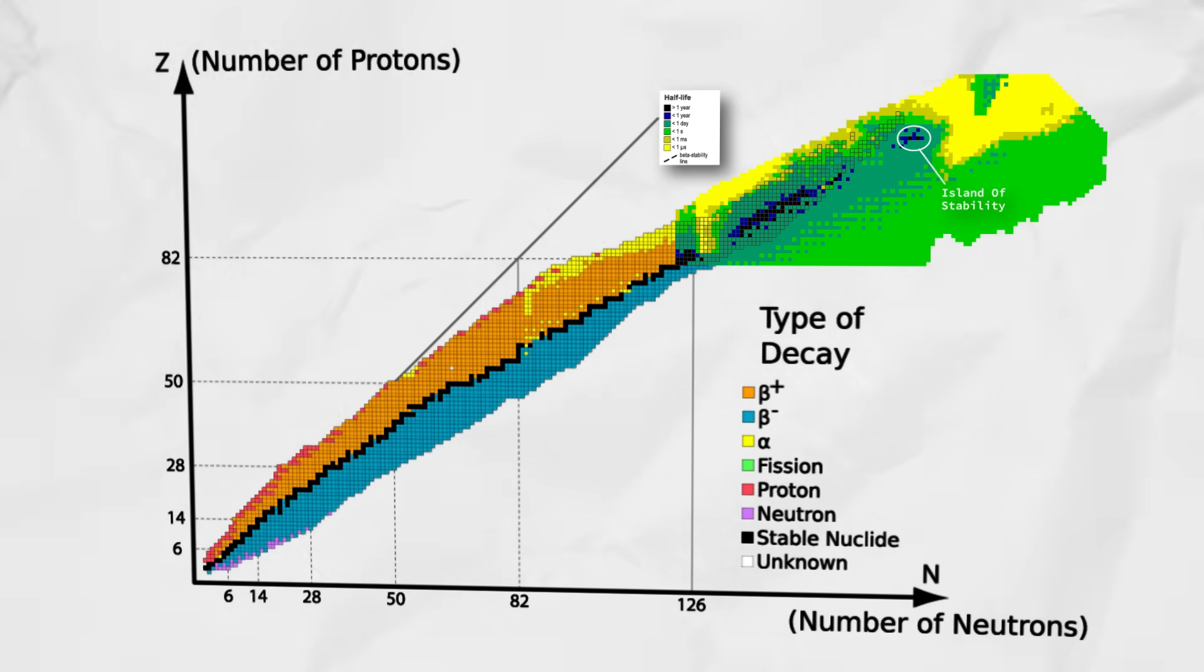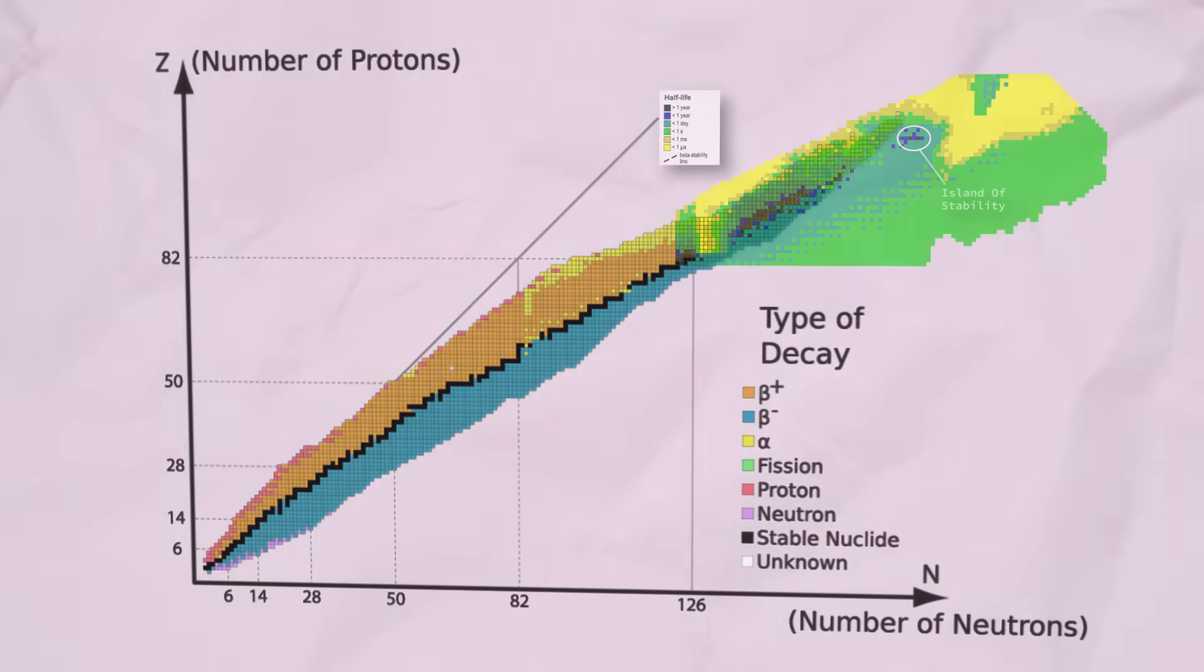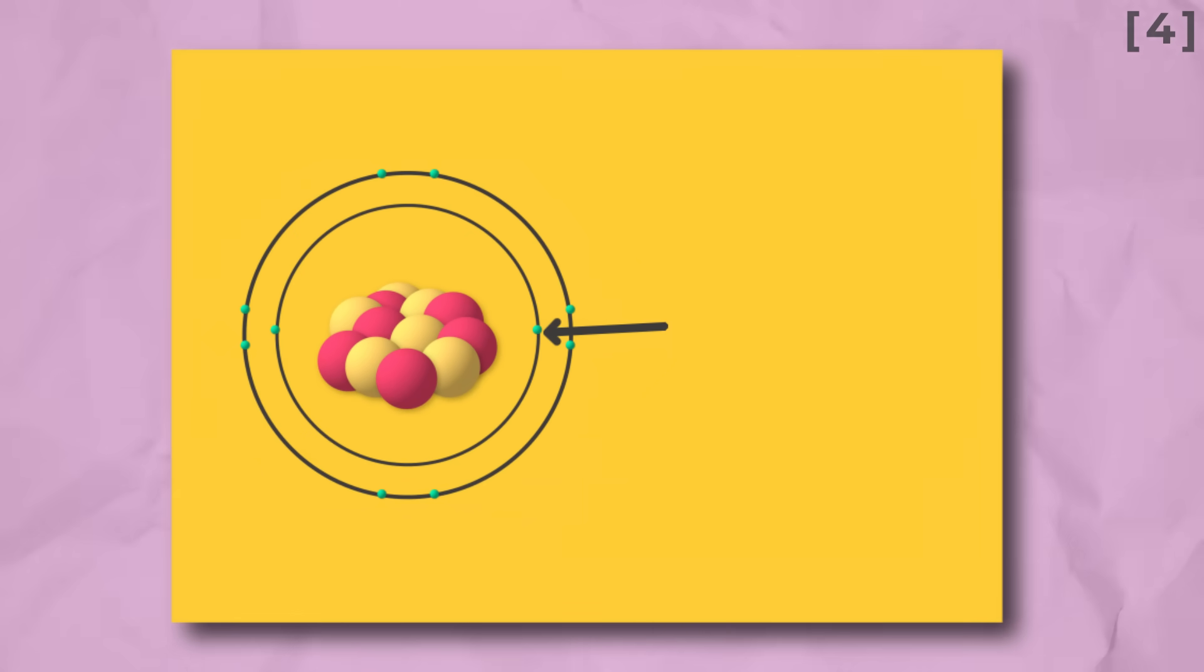But this doesn't quite answer the big question, how large can an element get? There's a bit of a folk legend amongst physicists that Richard Feynman once did a back of the envelope calculation to show that any element with an atomic number of 137 or greater would have its lowest energy electron travelling faster than the speed of light, which is impossible.